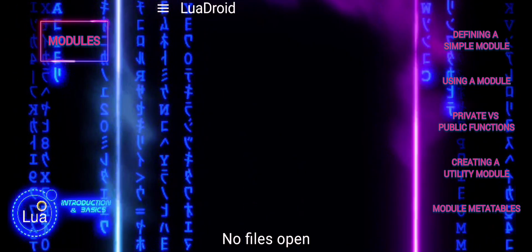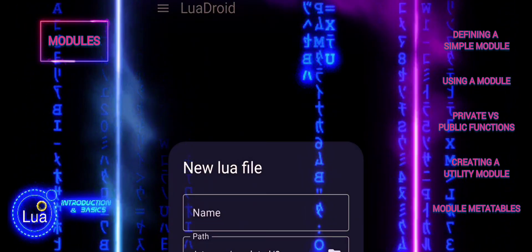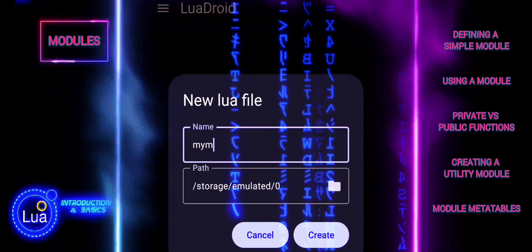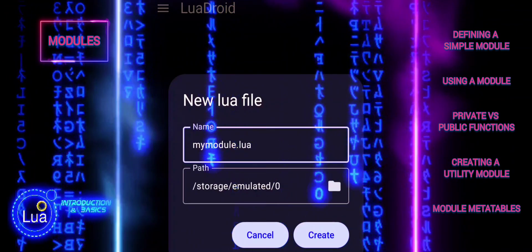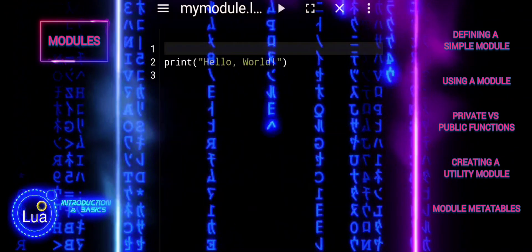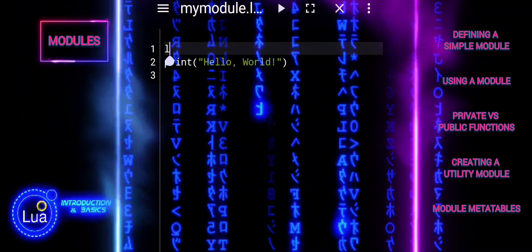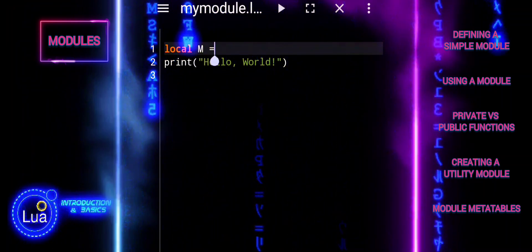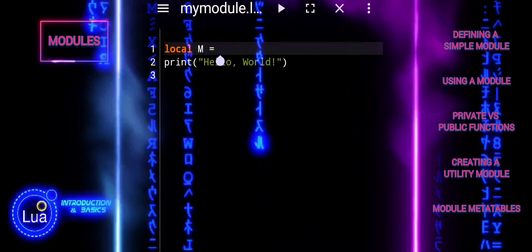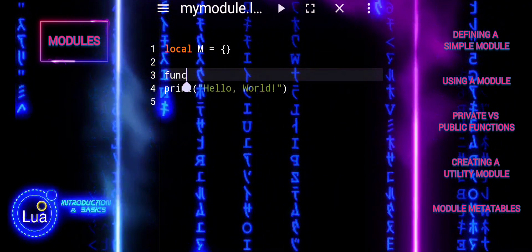To get started with Lua modules, let us create a very simple module that prints Hello World when a function is called. Local M creates a local table that will hold our module's functions and variables. Next, a function defines a function Hello within the module. Return M allows access by other Lua scripts that require this module.